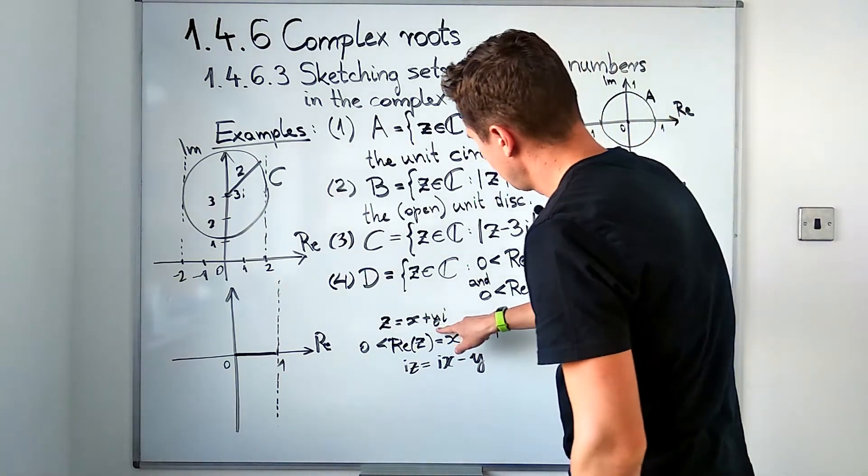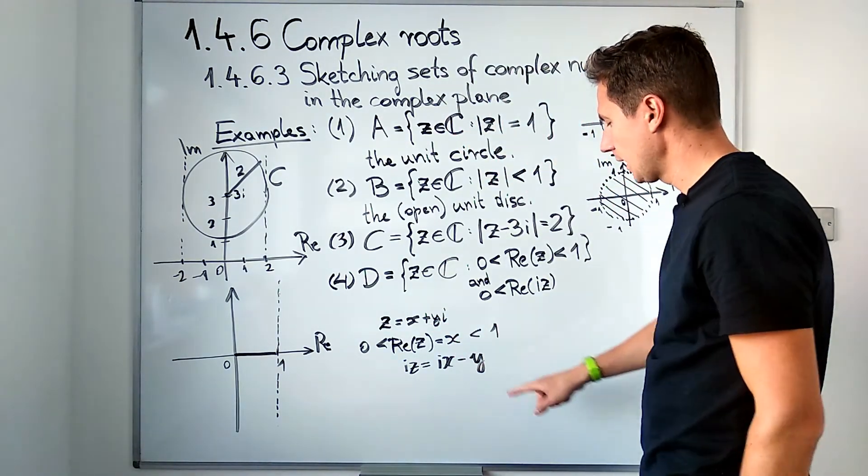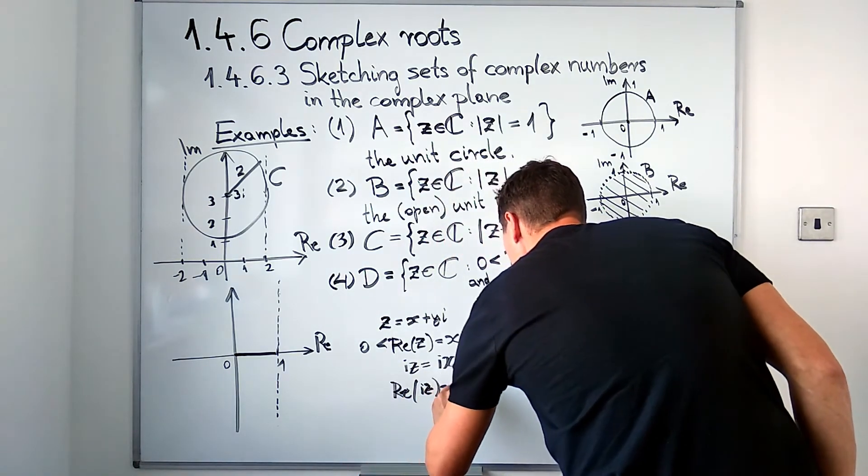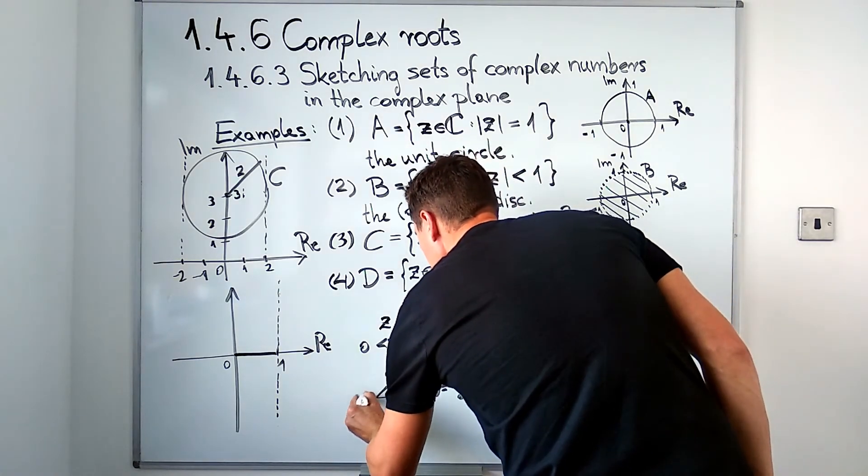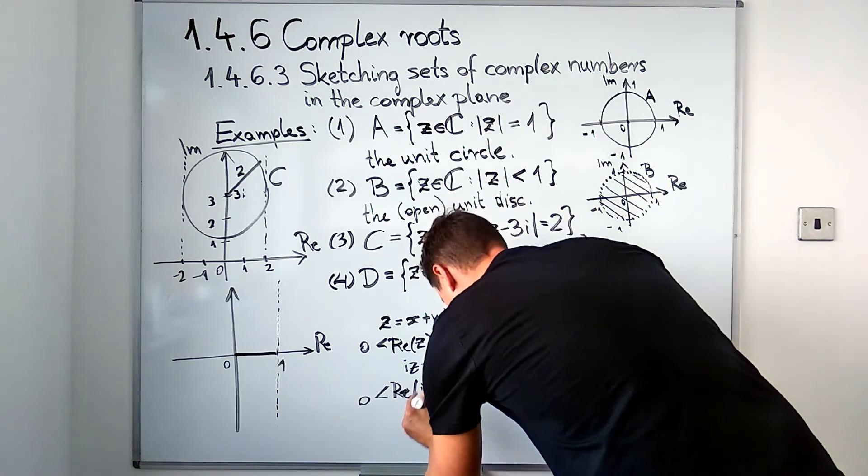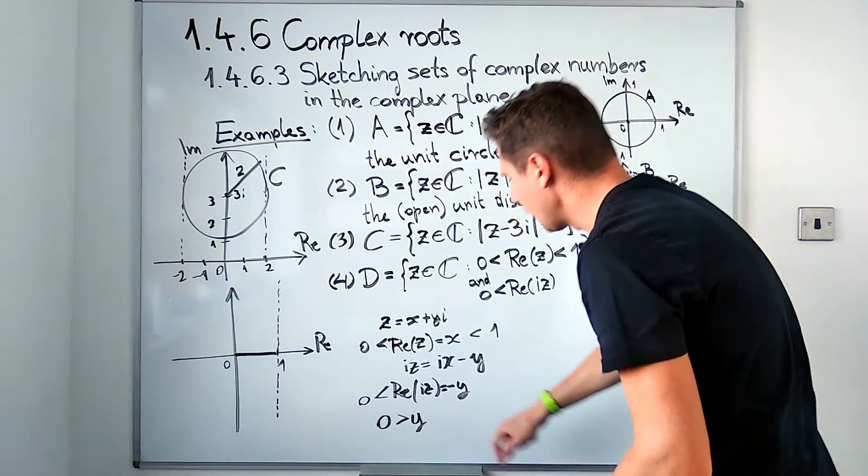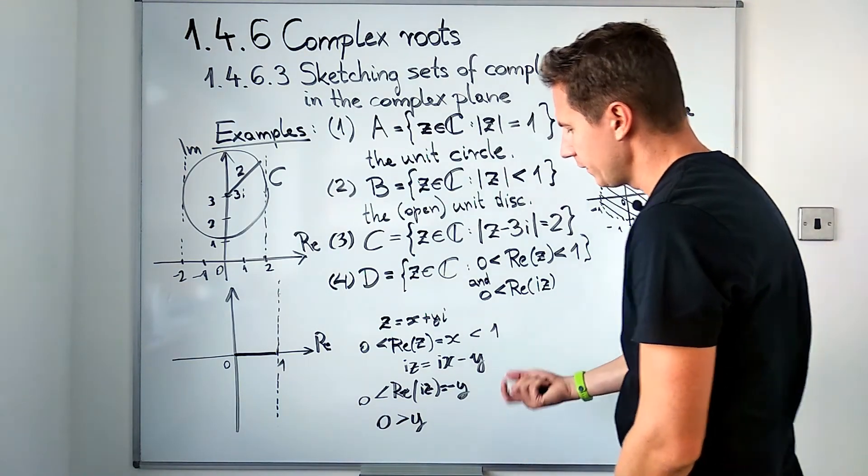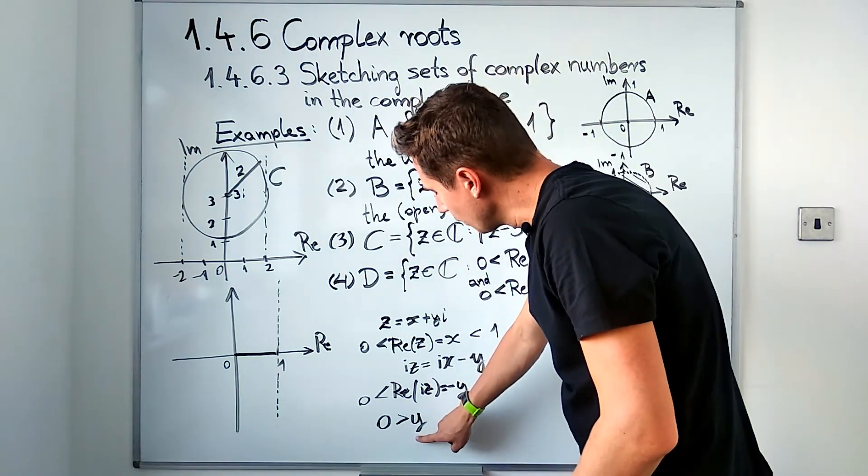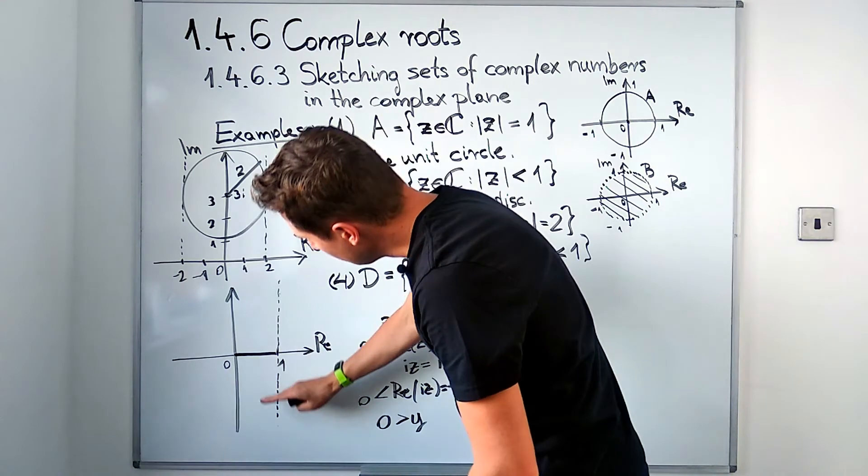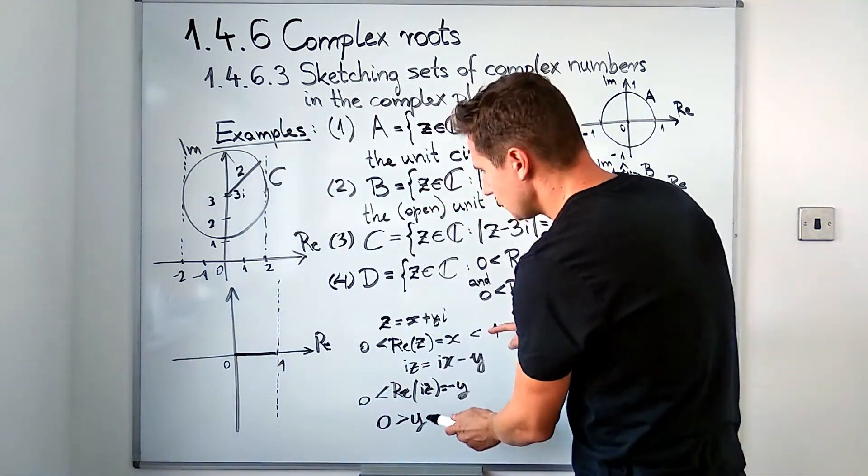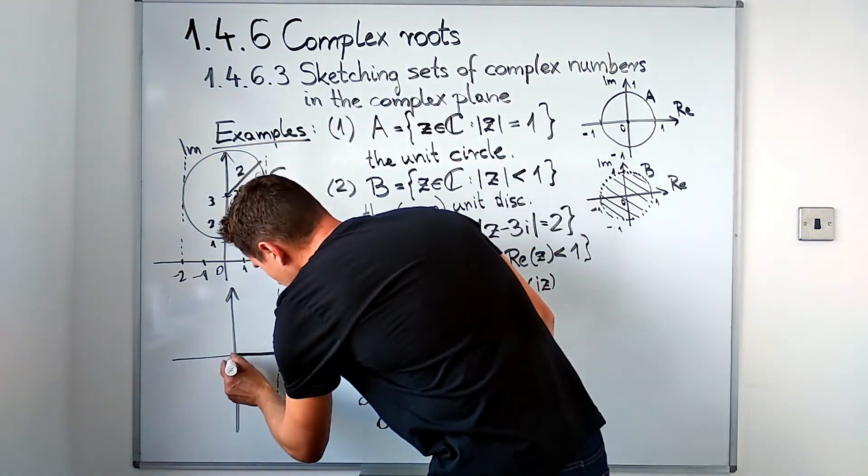The real part of i times z, well let's calculate i times z first. That's i times x plus i times yi, which gives us ix minus y. The real part of that number i times z is now negative y, and we require that to be positive. If negative y is supposed to be positive, that means that y is supposed to be negative.